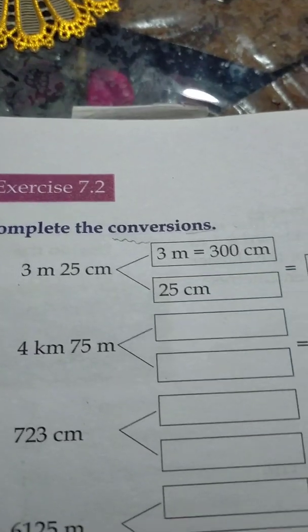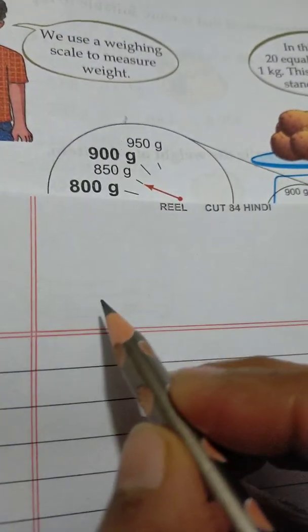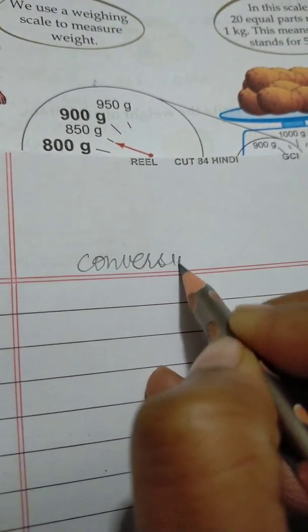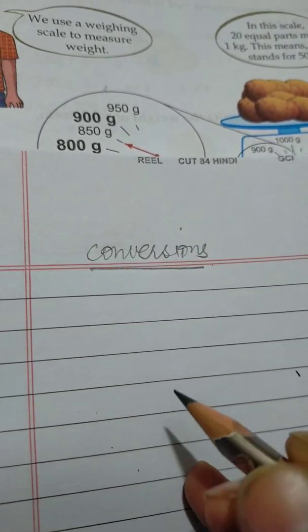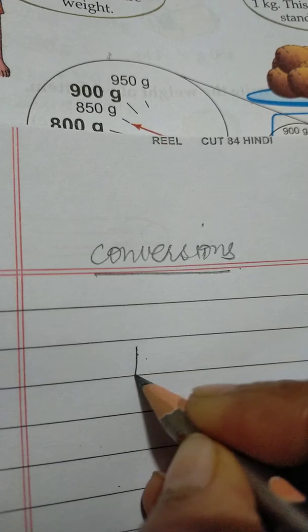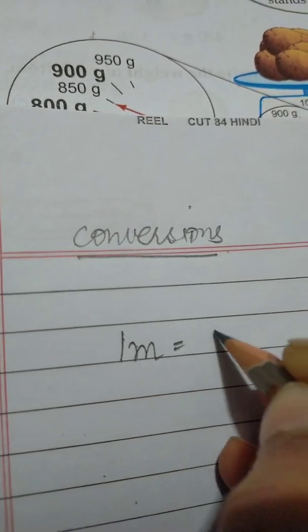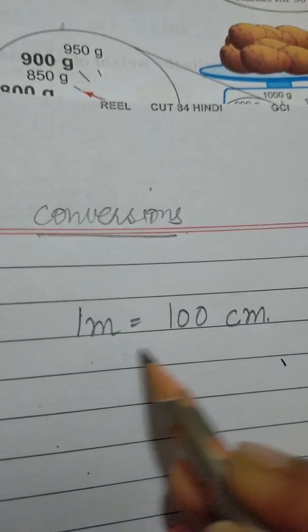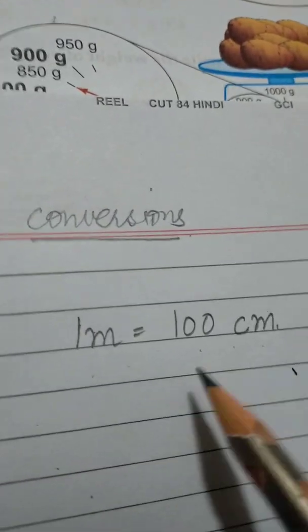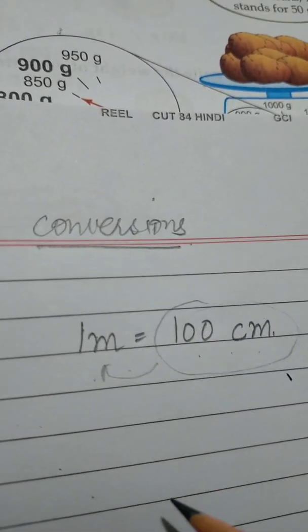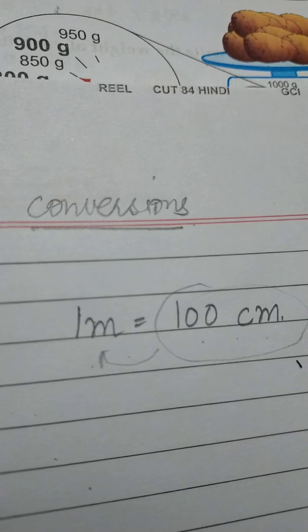Before doing the conversion, you must know the converting units. In one meter there are hundred centimeters. When there are hundred centimeters, we say it means one meter.